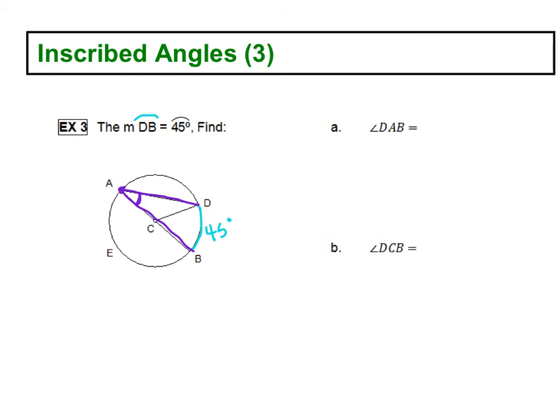Well, we can see the vertex is on the circle, so this is an inscribed angle. Inscribed angles are half the measure of the arc. We can see that this angle is forming that 45-degree arc, so we're going to take half of 45 and get an angle measure of 22.5 degrees.